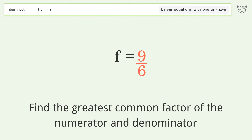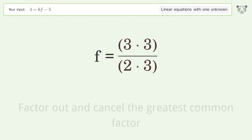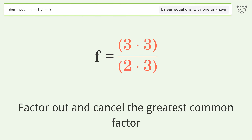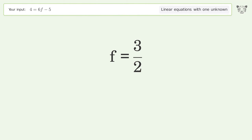Find the greatest common factor of the numerator and denominator, then factor out and cancel it. And so the final result is f equals 3 over 2.